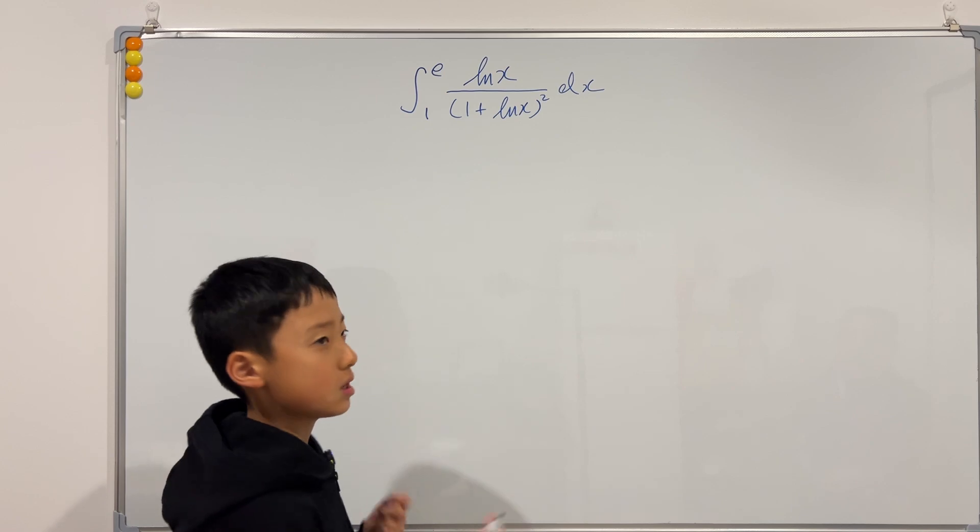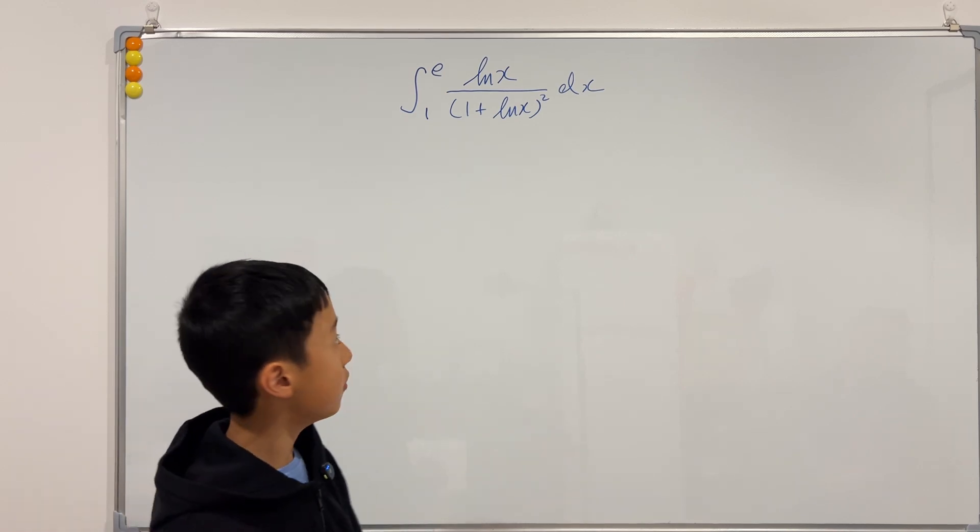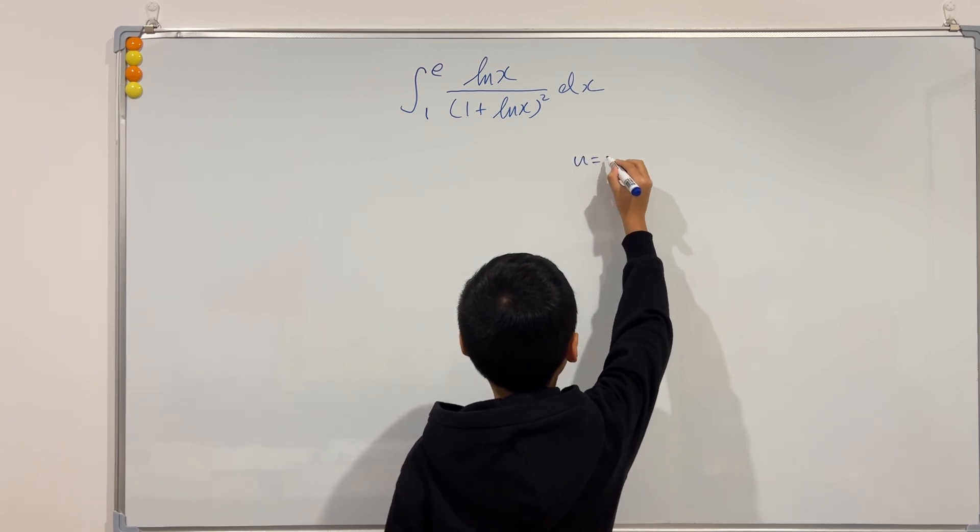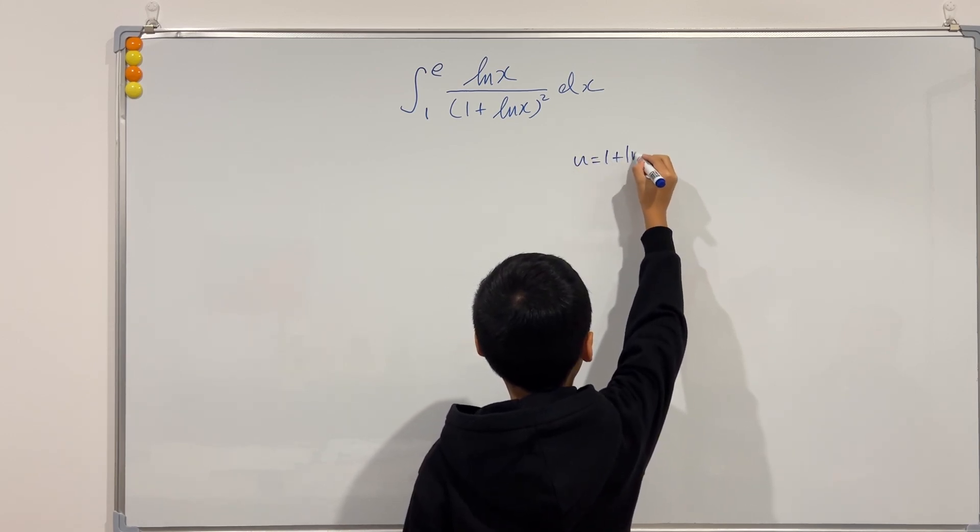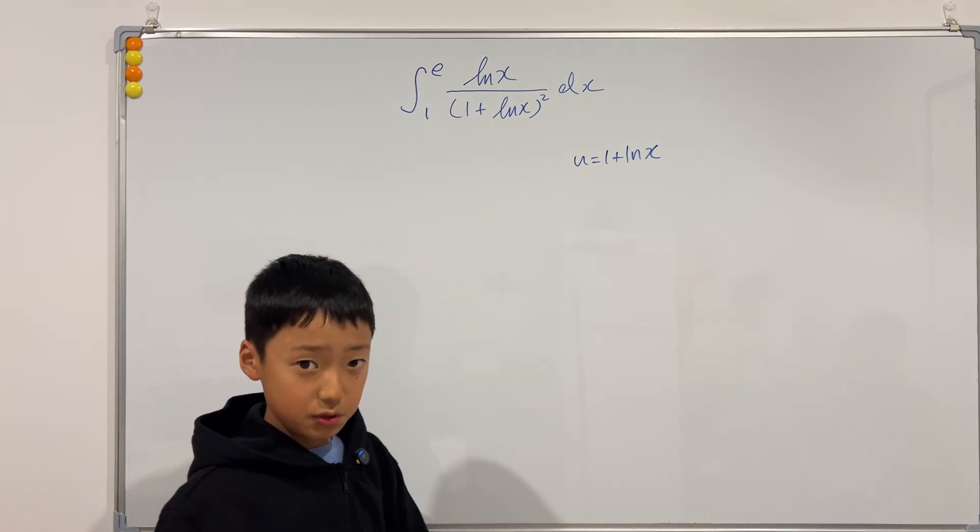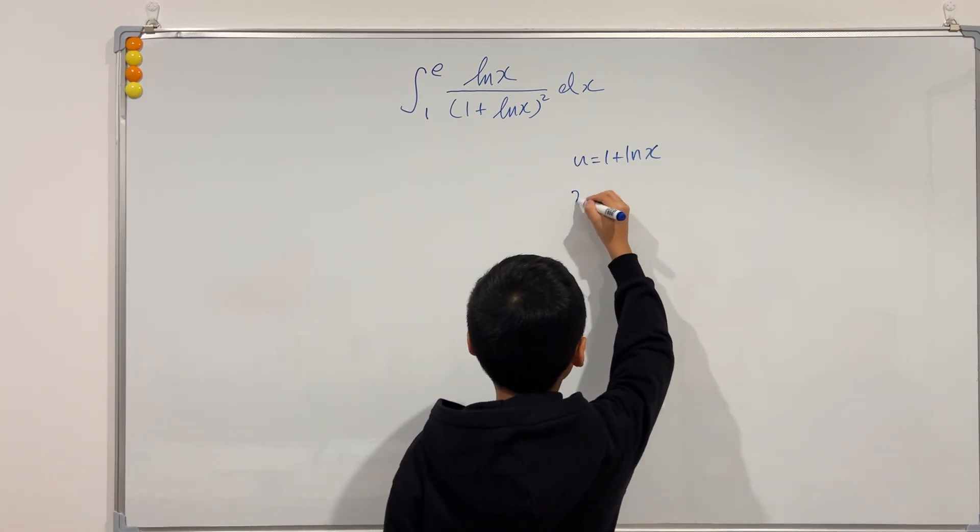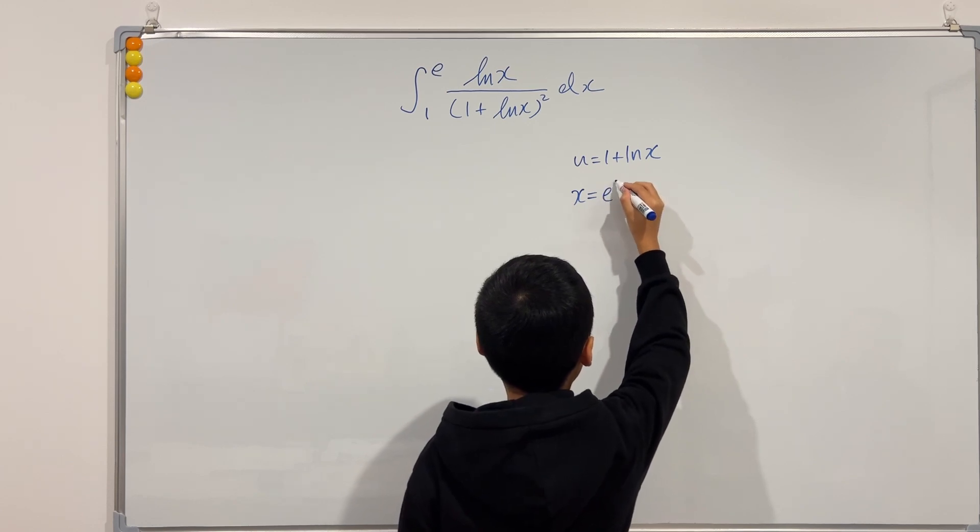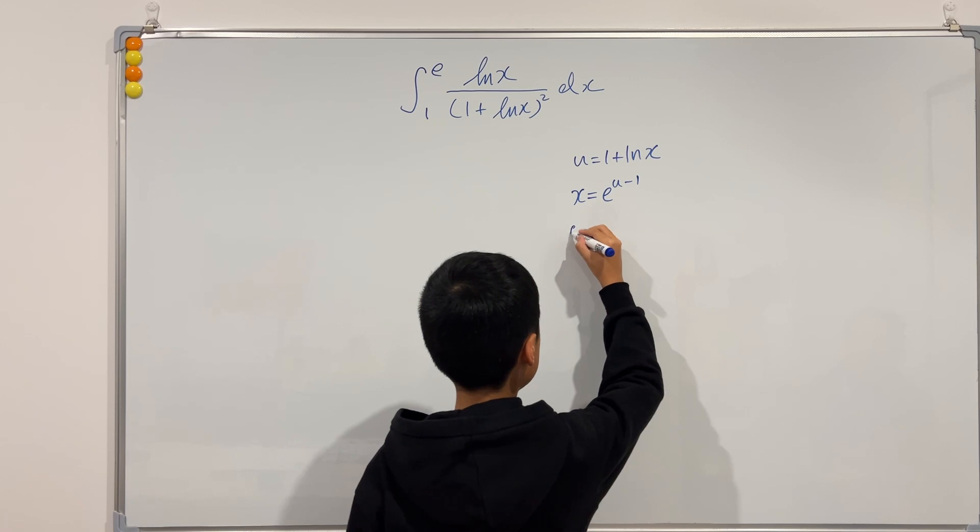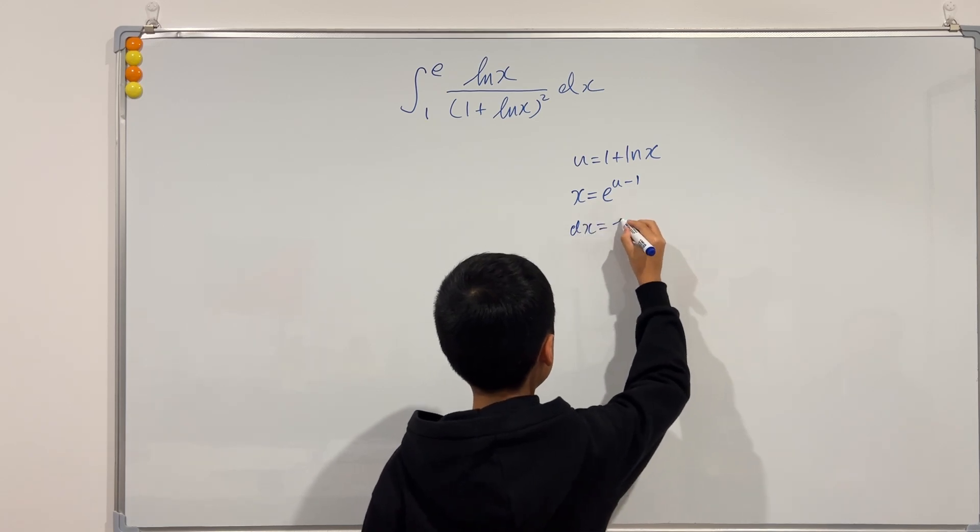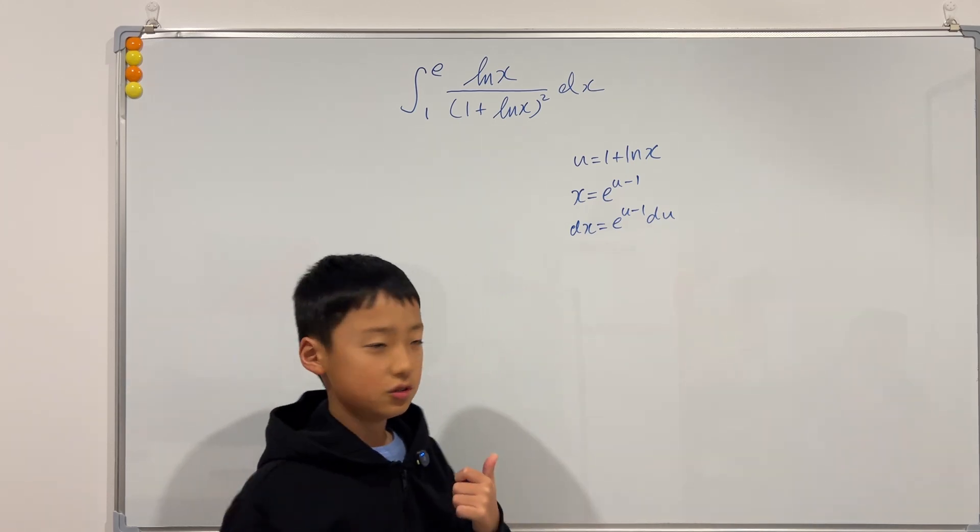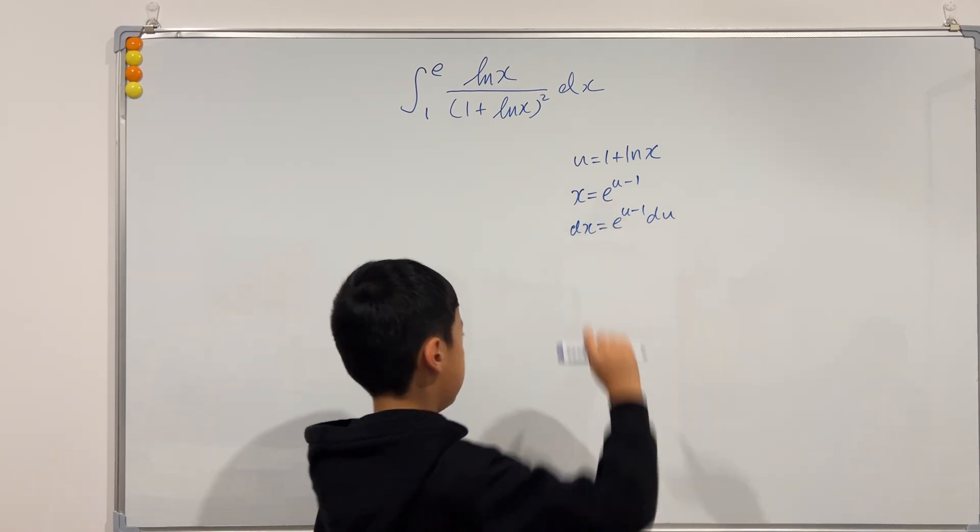Why don't we let u to be 1 plus ln of x? So if we let u to be 1 plus ln of x, then by a few steps you can solve that x is equal to e to the power of u minus 1. So dx will be e to the u minus 1 du. Because, as you know, the derivative of e is itself.